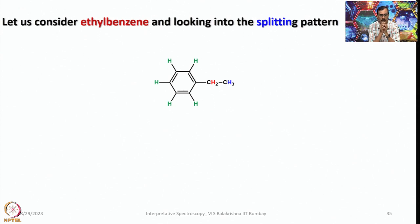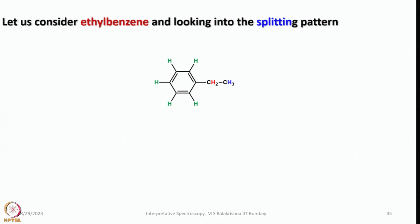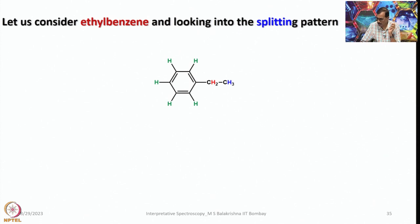Looking at the splitting pattern of ethyl benzene, while elucidating and interpreting the spectra, symmetry is very handy. If you focus attention on the aromatic protons and rotate through the C2 axis, this one and this one are equivalent, and these two are equivalent, leaving one more. That means it should show three signals in the aromatic region in a ratio of 1 to 2 to 2.